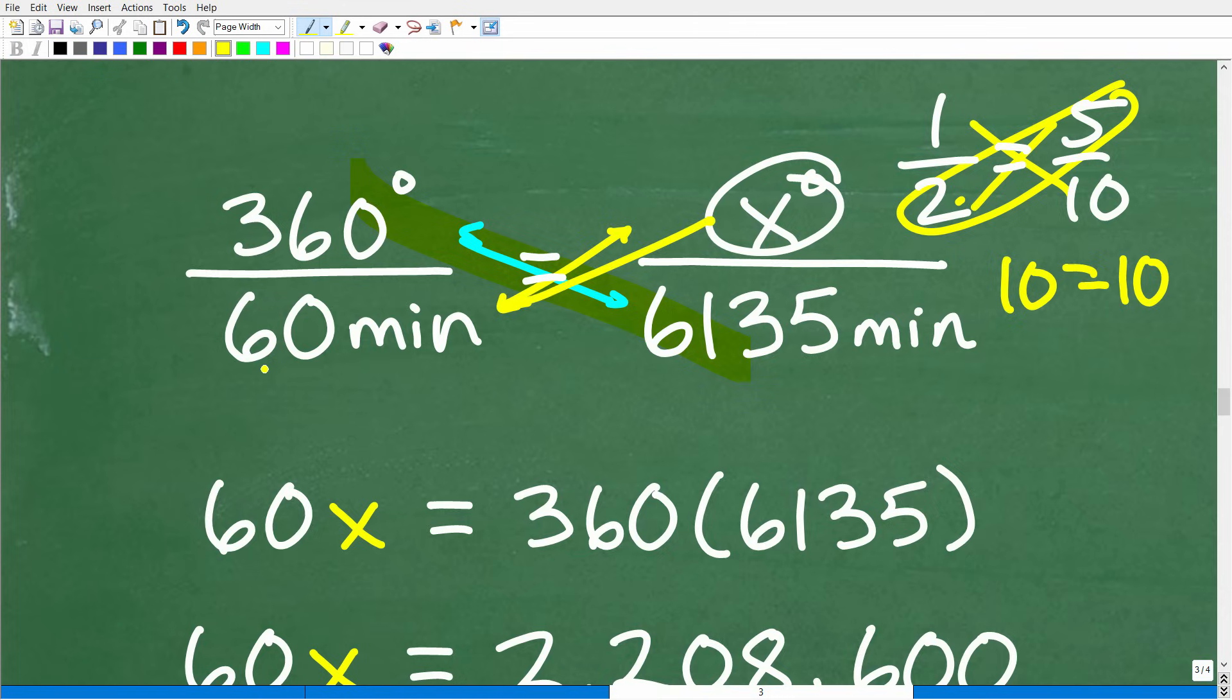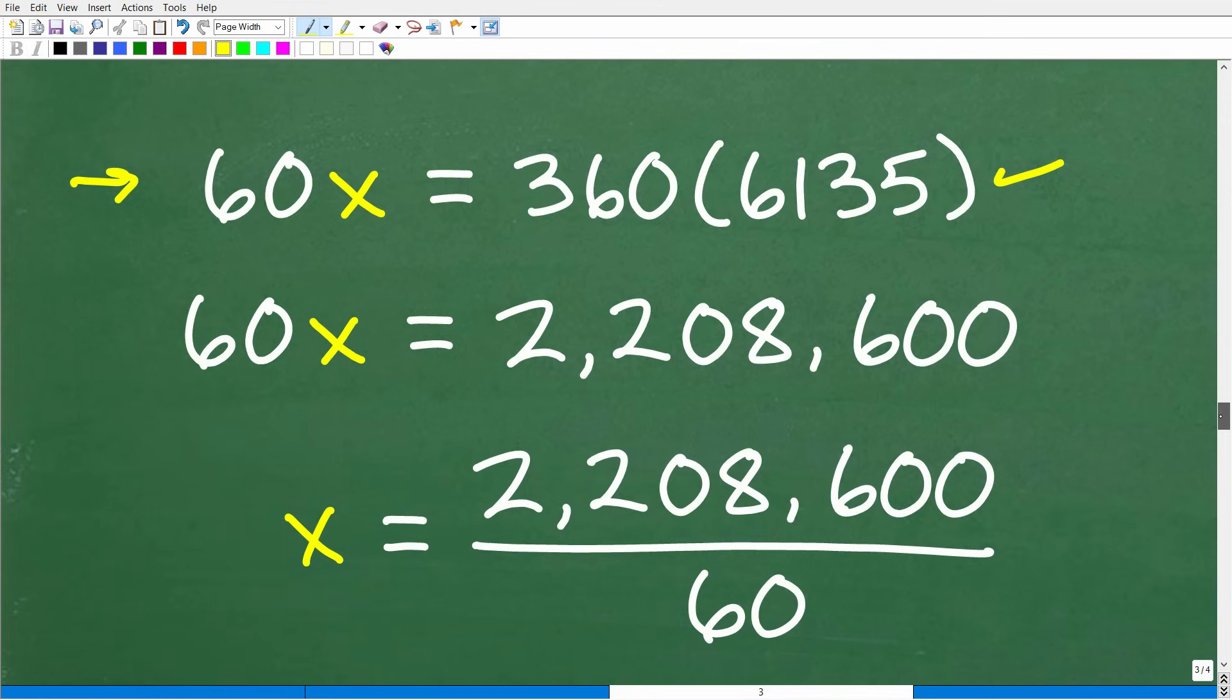Alright. So X times 60 or 60 minutes will be 60X. And then 360 times 6,135 will be this. So let's go ahead and get our calculators out because we're going to need them. Alright. So 60X is equal to 360 times 6,135. And when we put this into our calculator, we get this nice number right here, 2,208,600. So 60X is equal to this. So X will be equal to 2,208,600 divided by 60.